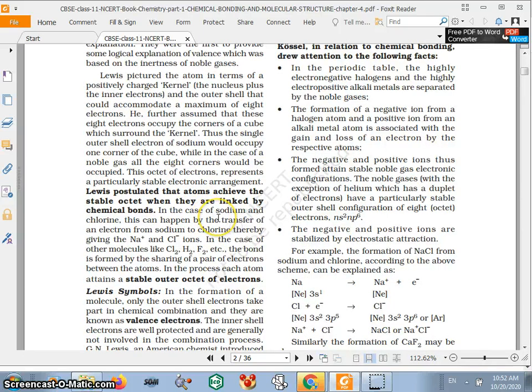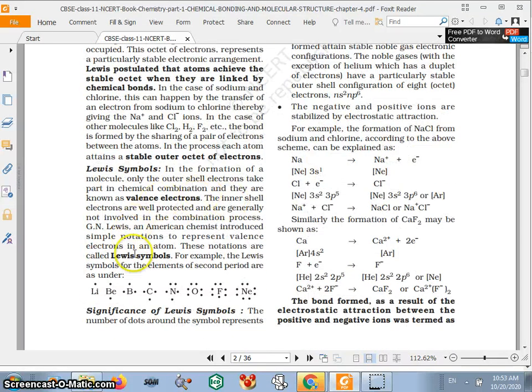atoms achieve the stable octet when they are linked by chemical bonds. Their target is a stable octet. Just remember a stable octet. In case of hydrogen, the stable outer configuration is two electrons.